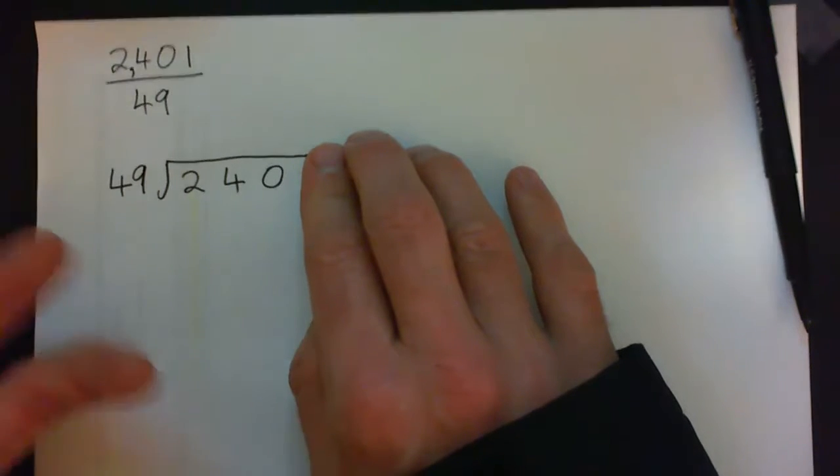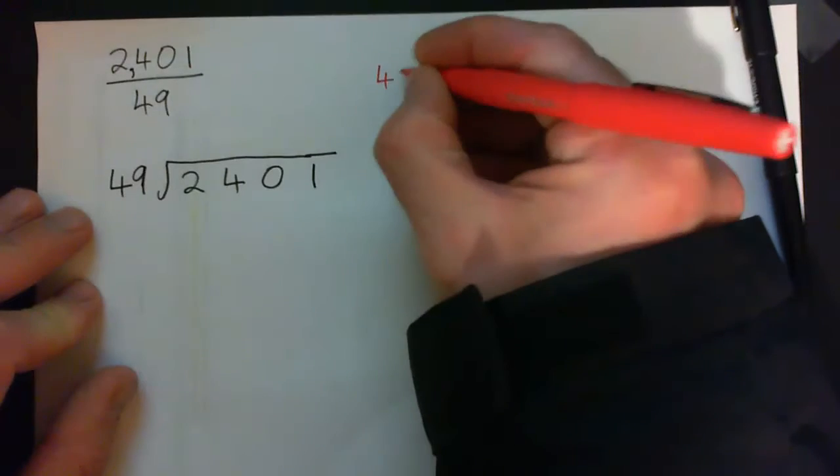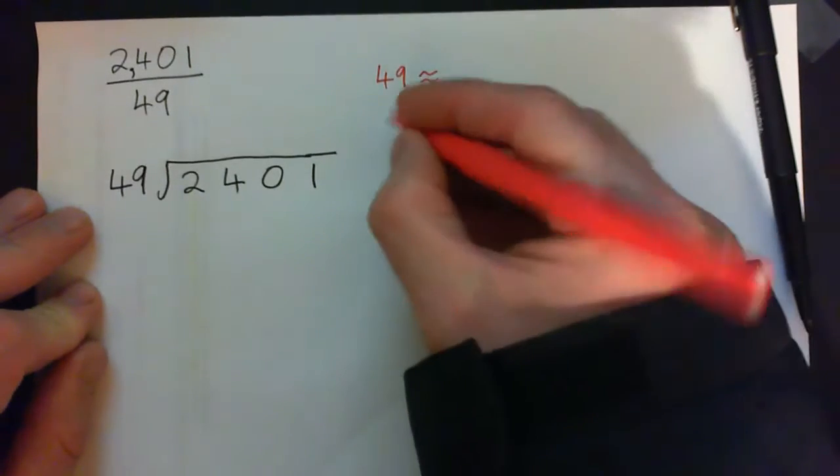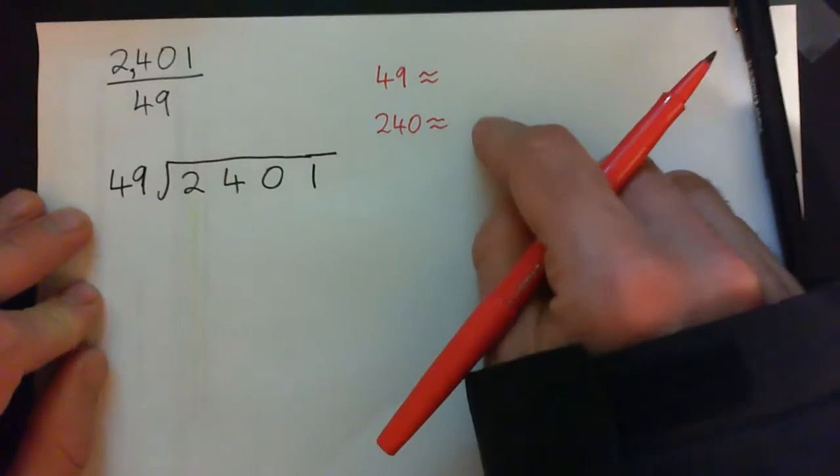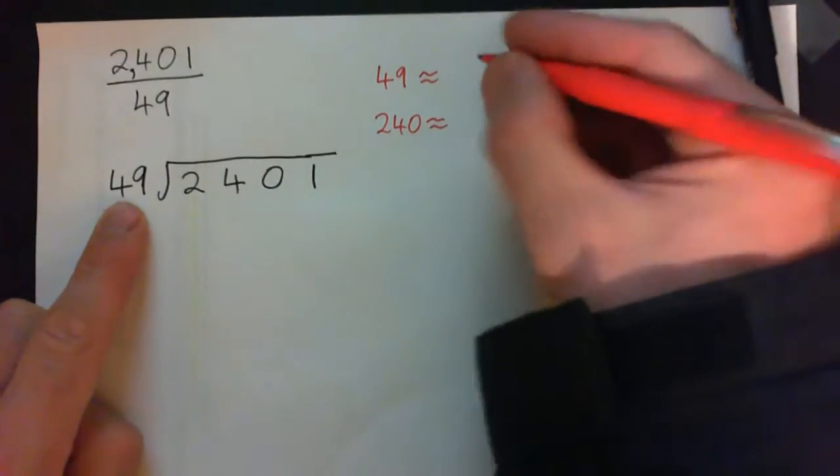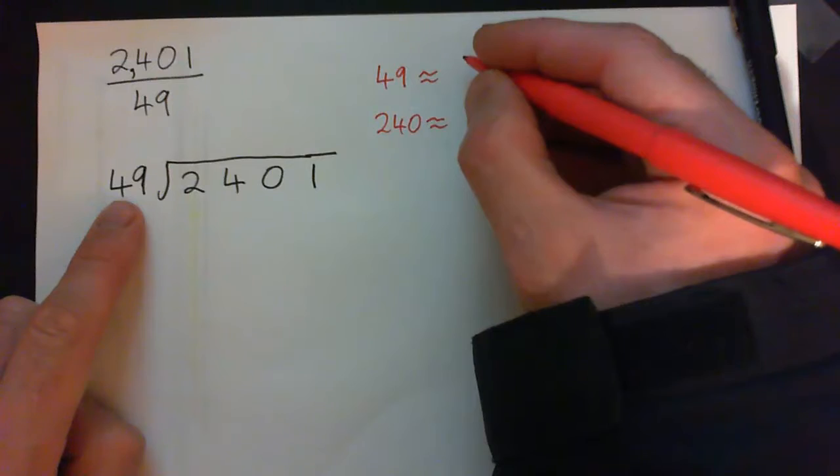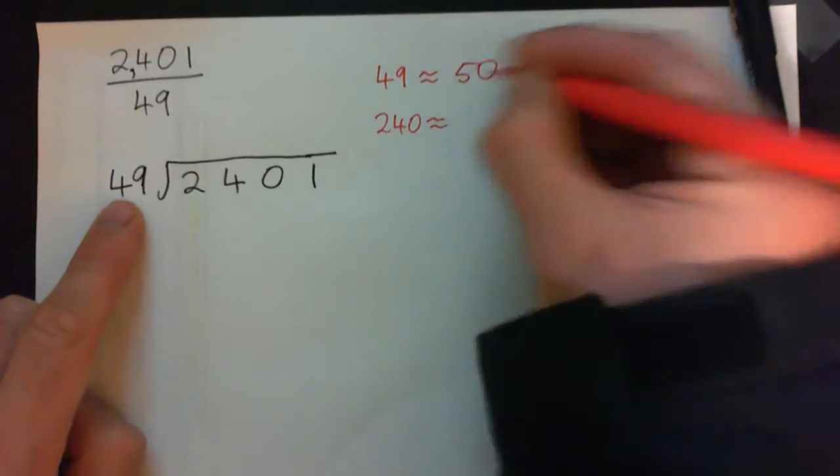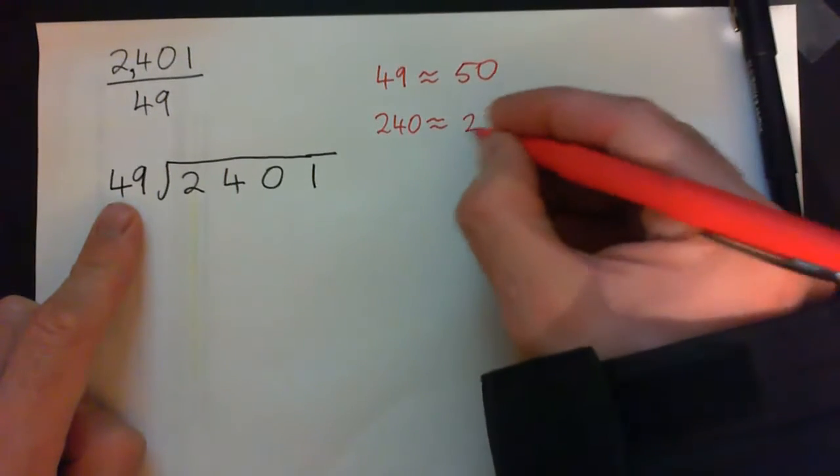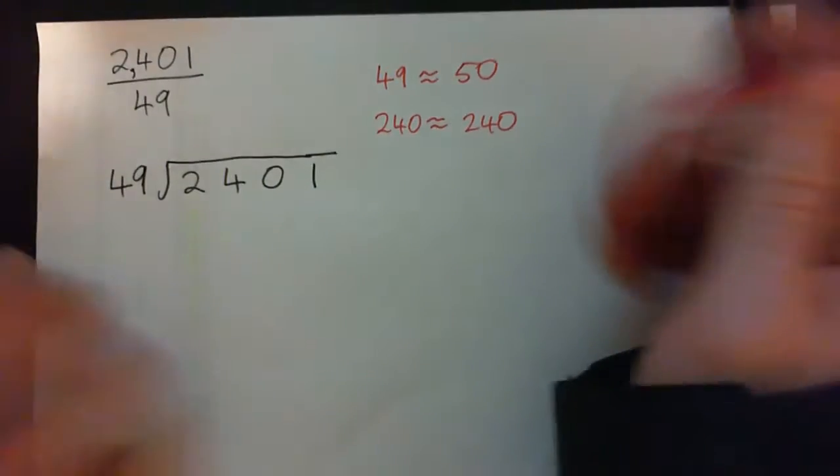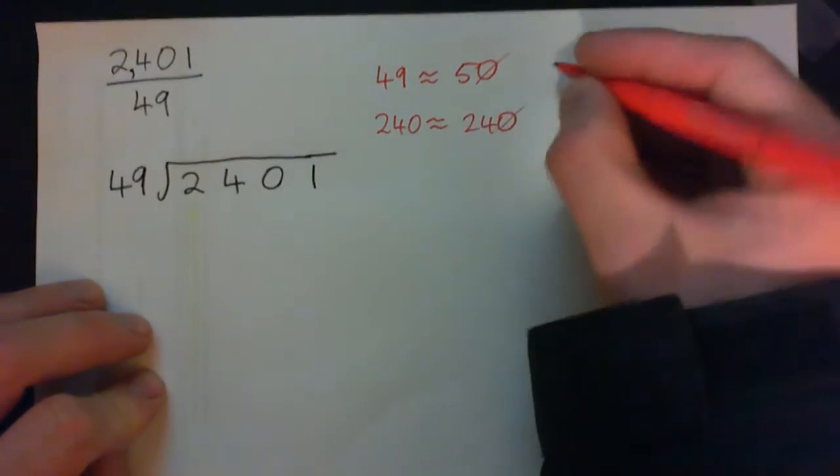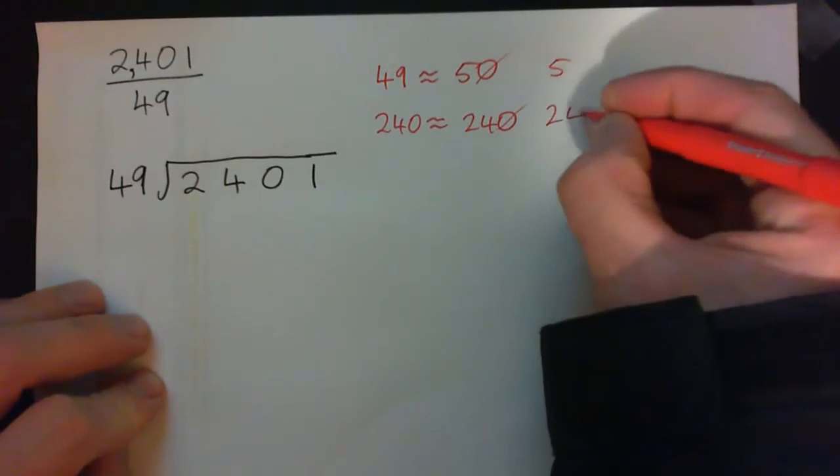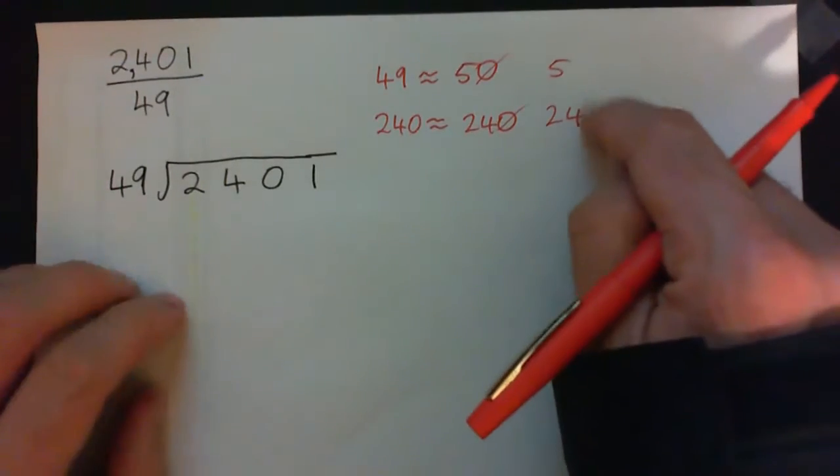And you may not know your 49 times tables, so I recommend you round. 240 is approximately what? So 49 is approximately 50, right? 240, 240.